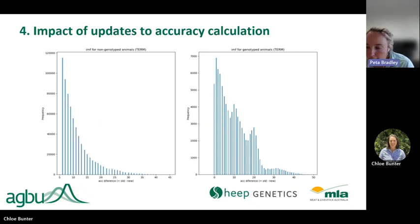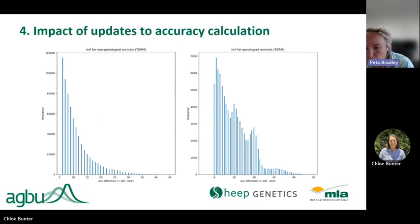Generally, we see accuracy decrease across the board as they were previously overinflated. The graph on the right looks at the accuracy change for intramuscular fat for genotyped animals. On average, genotyped animals generally see a larger change or decrease in accuracy as a result of this enhancement compared to non-genotyped animals.